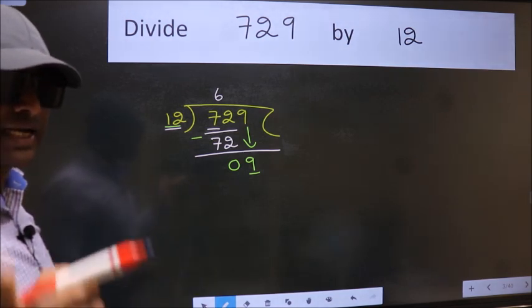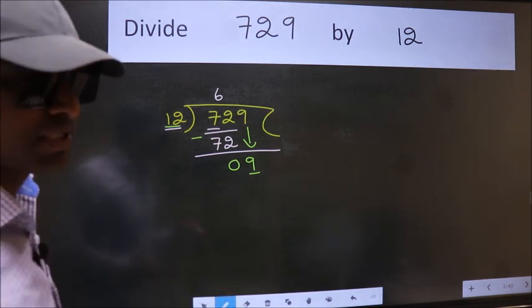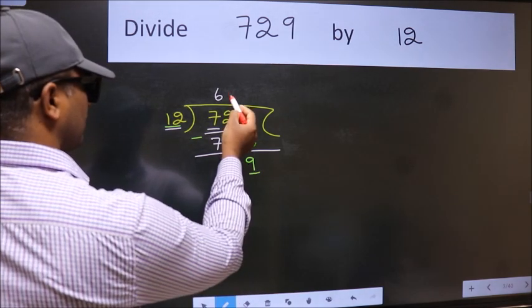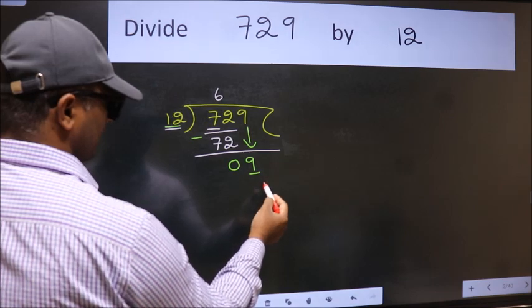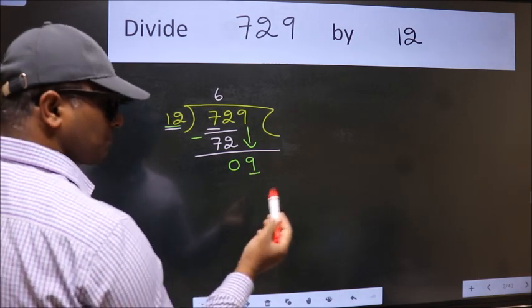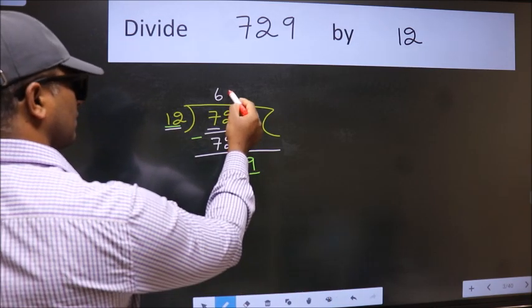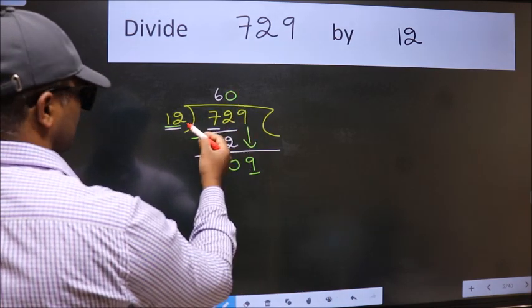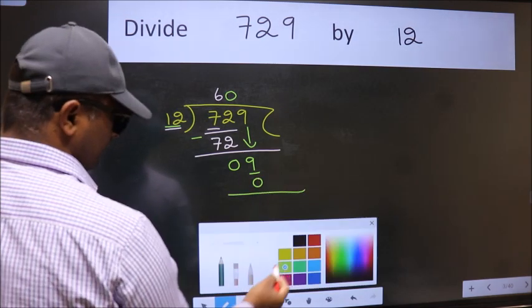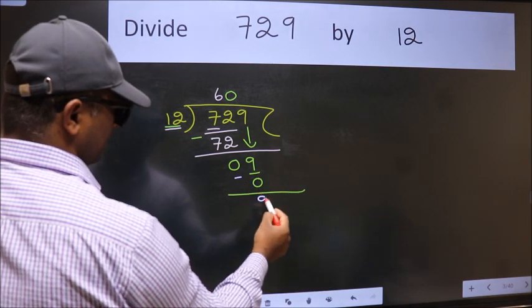Instead of that, what we should think of doing is which number should we take here. If I take 1, we will get 12. But 12 is larger than 9. So what we do is we take 0 here. So 12 into 0, 0. Now we subtract. We get 9.